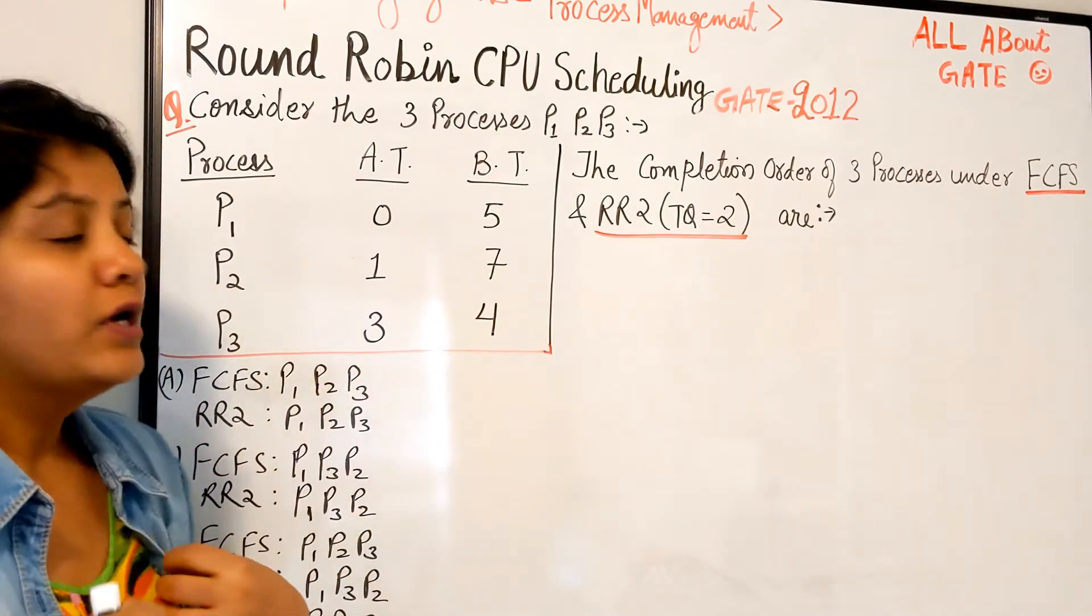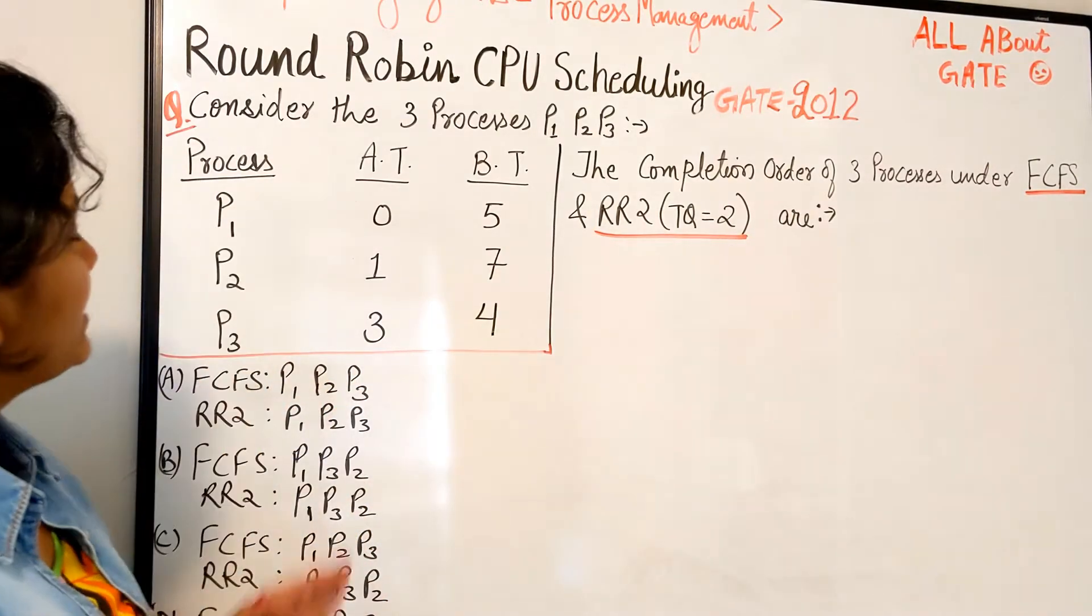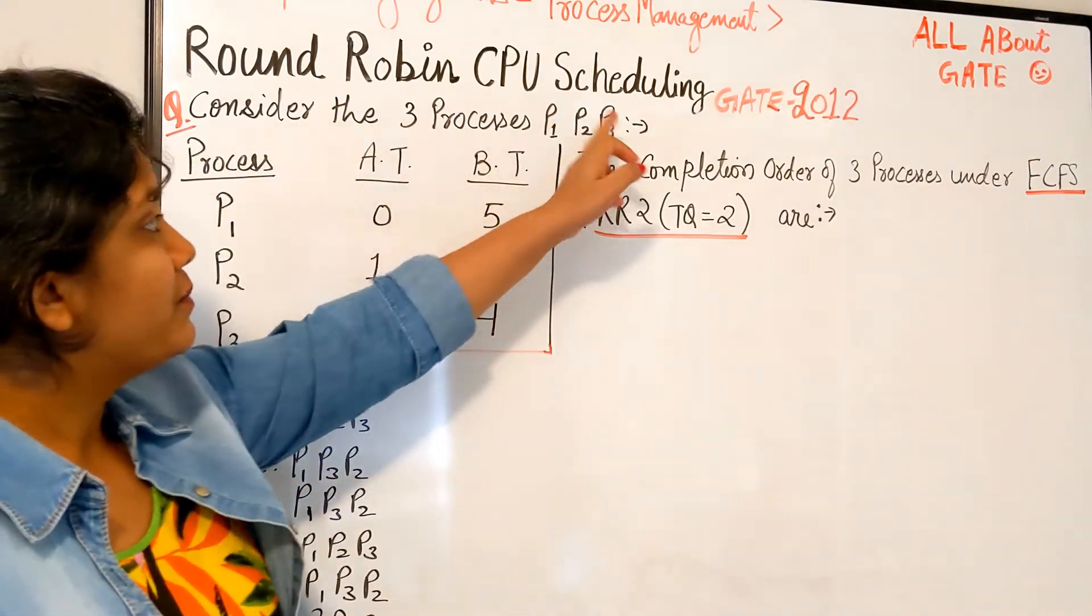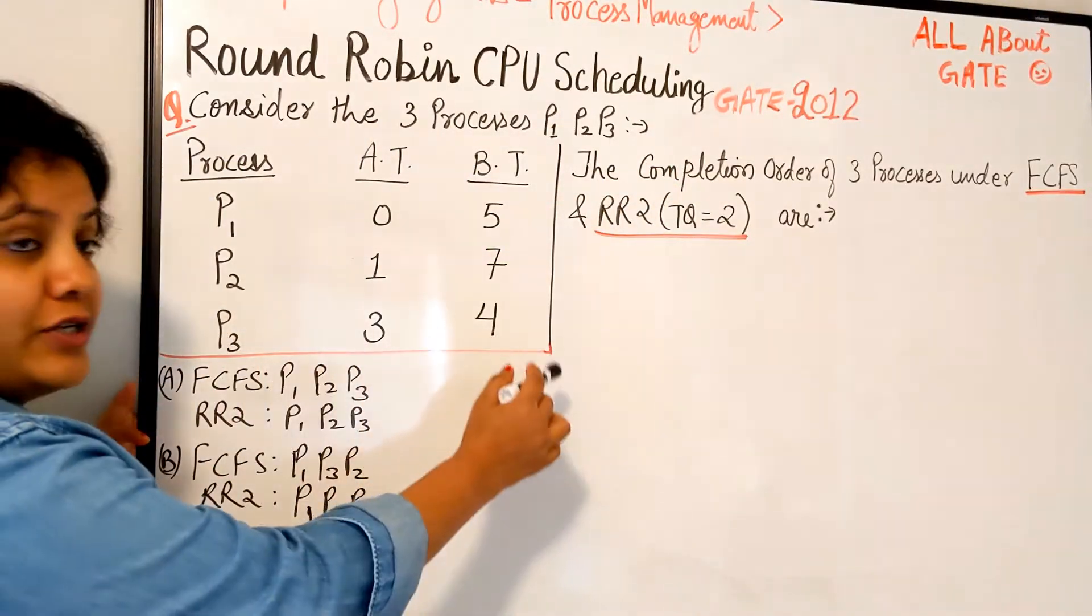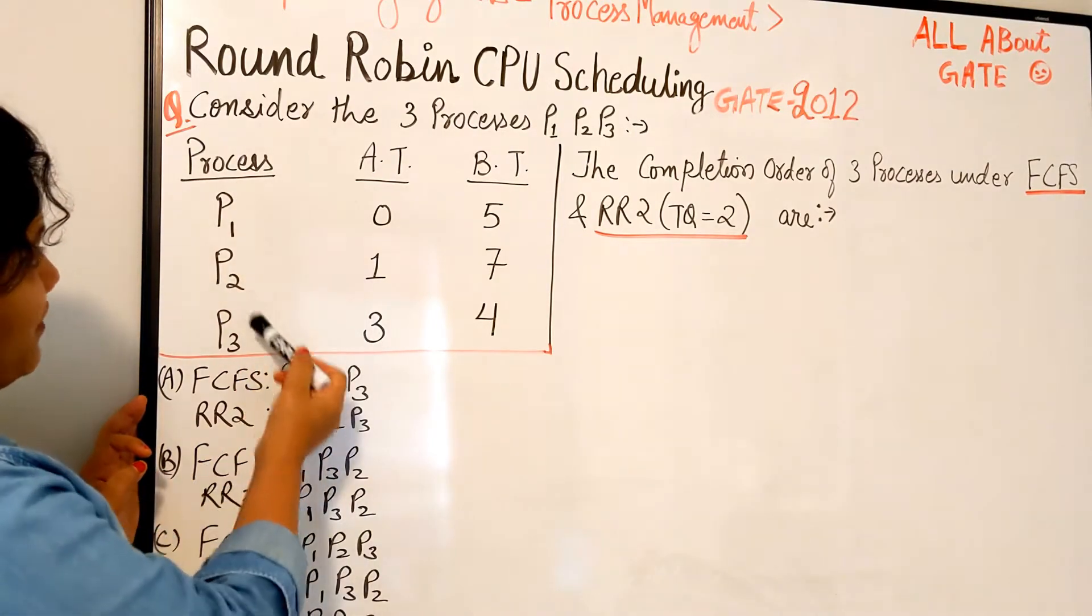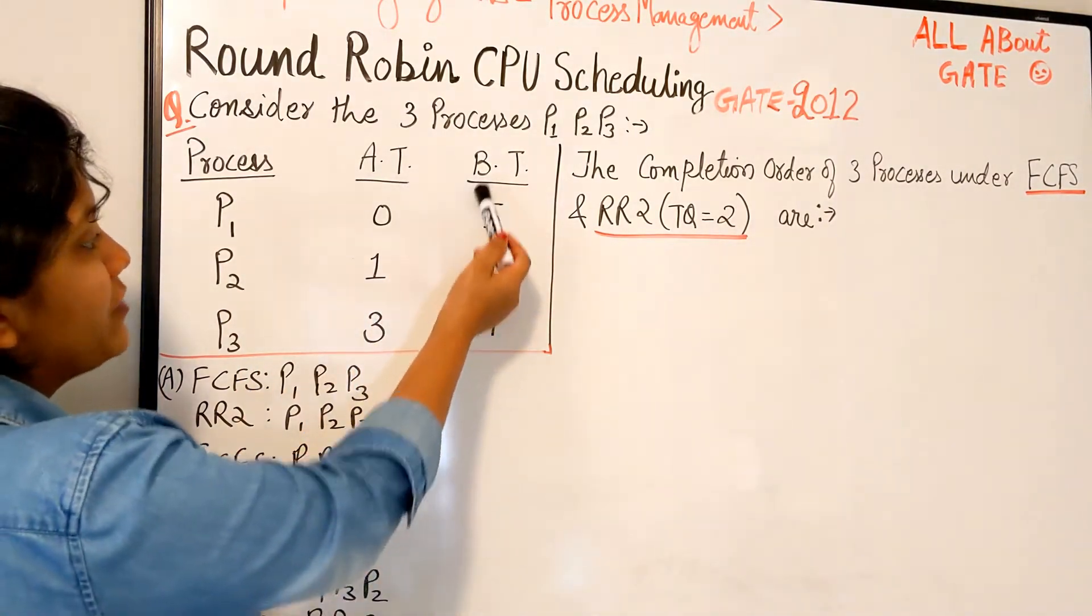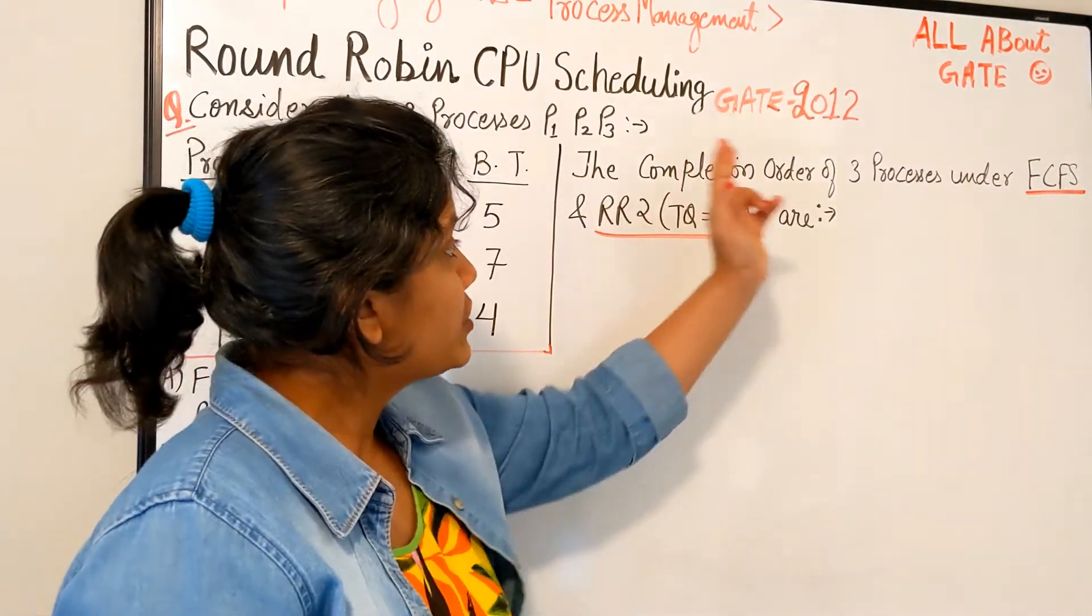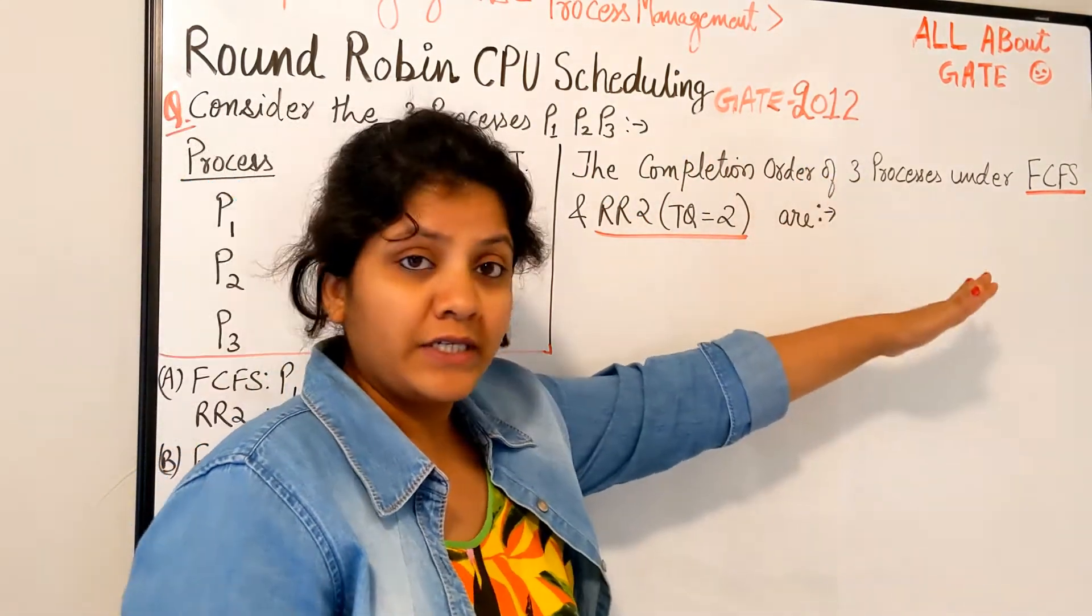We are going to solve it for two algorithms. The question is right here. Let me read it out for you. Consider the three processes P1, P2, P3 given right here with their arrival time and burst time requirements. Now the question asks for the completion order of the three processes under First Come First Serve and Round-Robin algorithms.